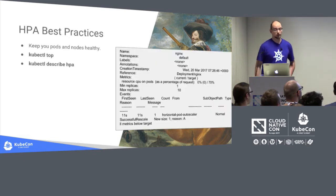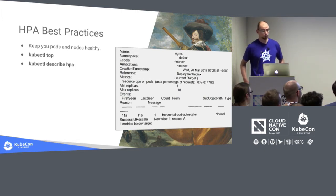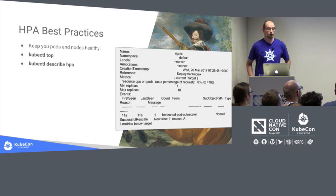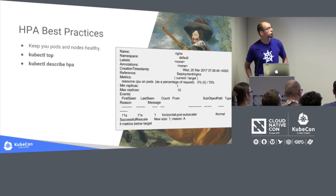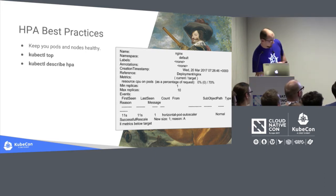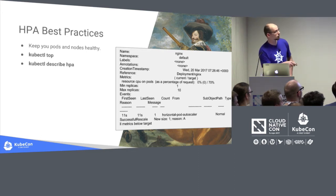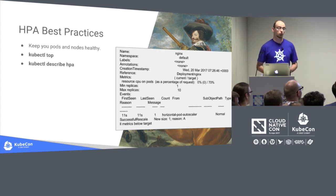There are two commands that can help you understand what's going on with your pods. First, 'kubectl top' shows CPU and memory consumption on your nodes and pods. There is also 'kubectl describe hpa', which tells you the current load level and what decisions are being made by the horizontal pod autoscaler, so you can understand its mechanics better.